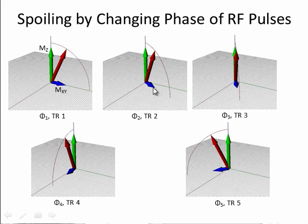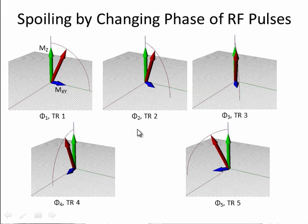At the second TR, the phase of the RF pulse has changed — not the flip angle, which remains the same — so the direction of the transverse magnetization is now in the X-Y plane, not directly on the Y axis. At the next TR we have a different phase, and so on. This series of events where the RF phase is changed is called phase cycling. Usually the phase is changed as a quadratic function — there is a specific equation which gives you the optimal spoiling by this method.